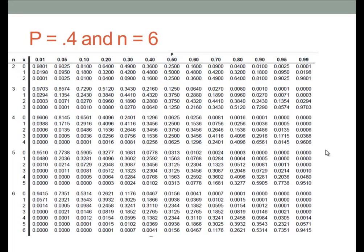In this particular example, I just have the top of the first page here, and we're given the problem that we have P as 0.4 and N as 6.